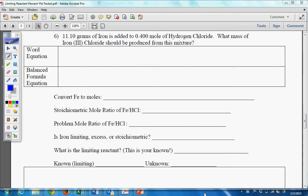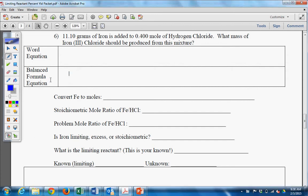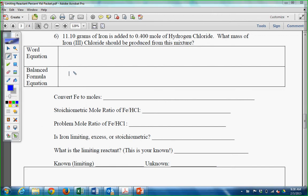11.10 grams of iron is added to 0.4 moles of hydrogen chloride. What is the mass of iron 3 chloride that should be produced from this mixture? The first thing you need to do is write the balanced equation. We're going to write iron plus hydrogen chloride. I'm going to say it's aqueous just because I know it's aqueous. And the good news is it tells you what is made. Iron 3 chloride.